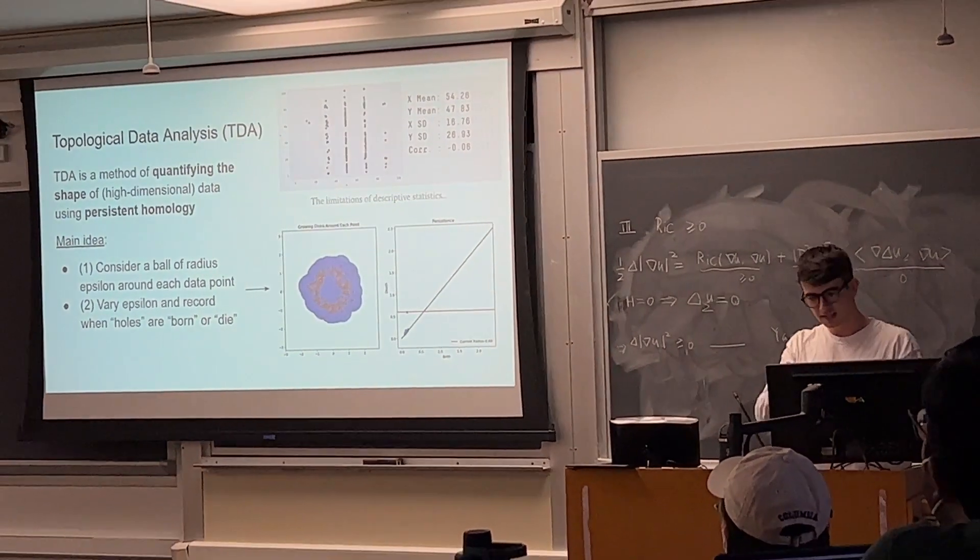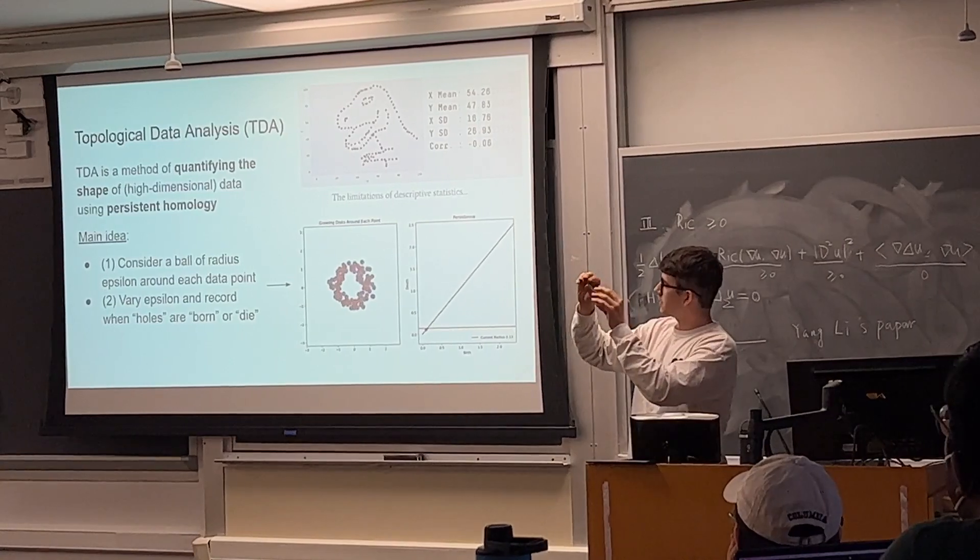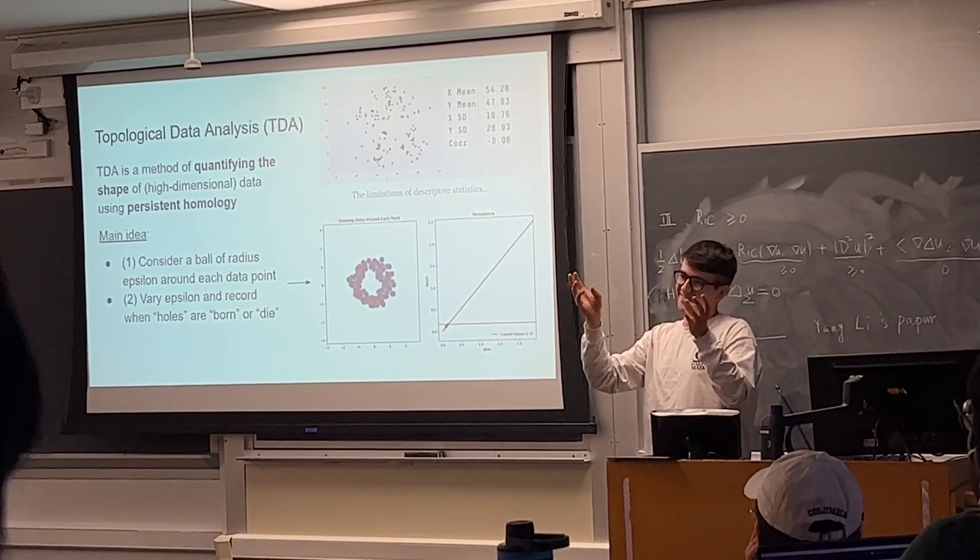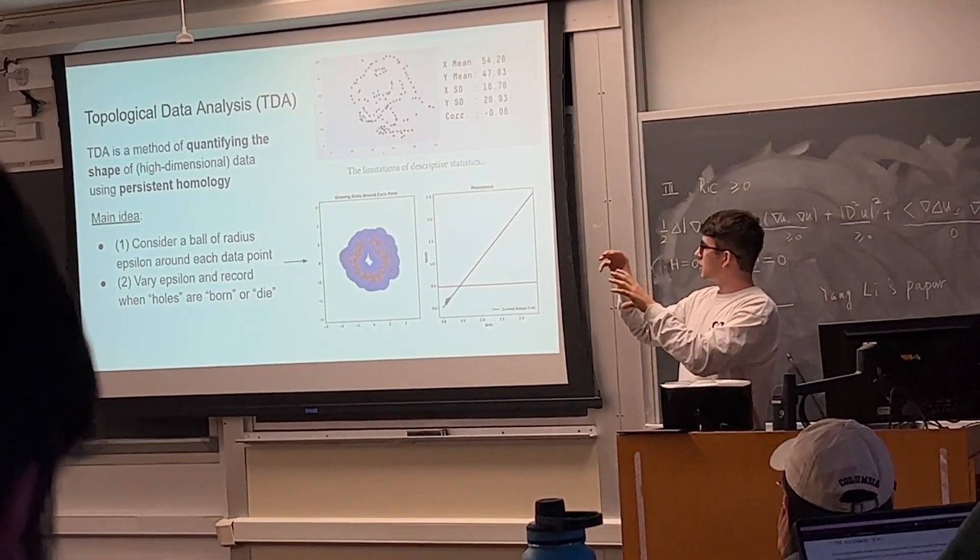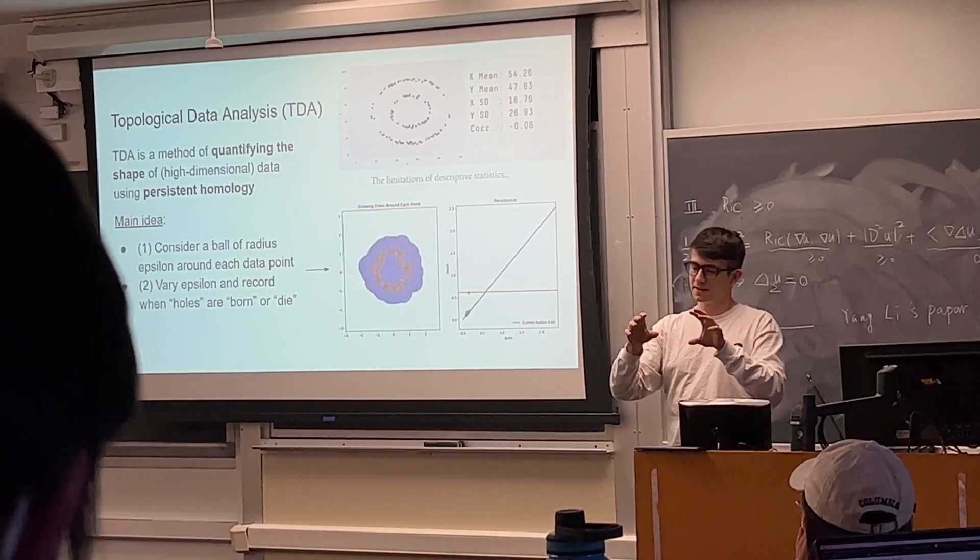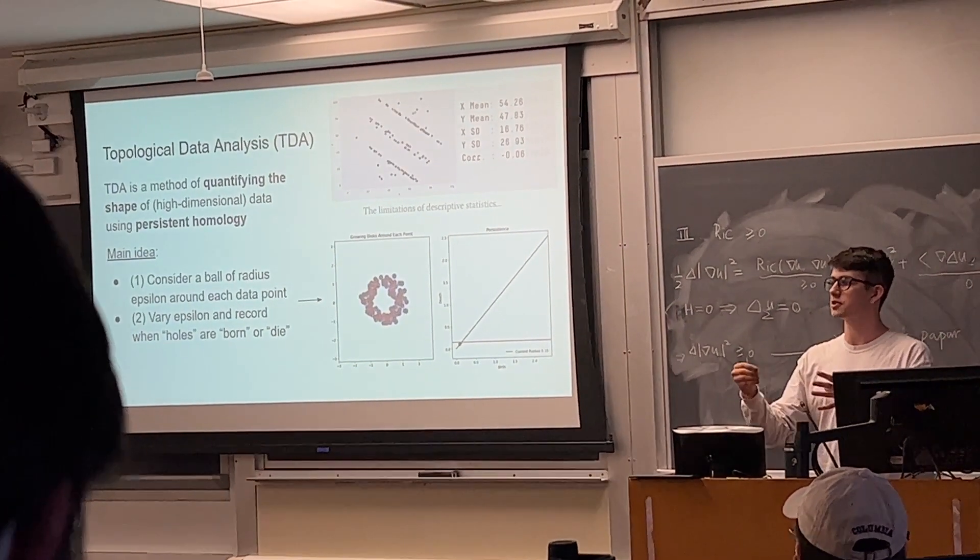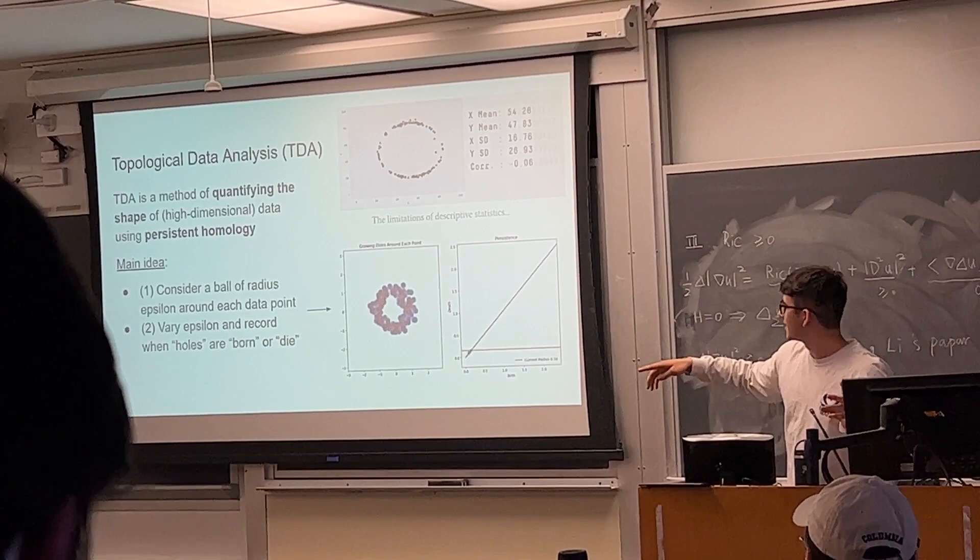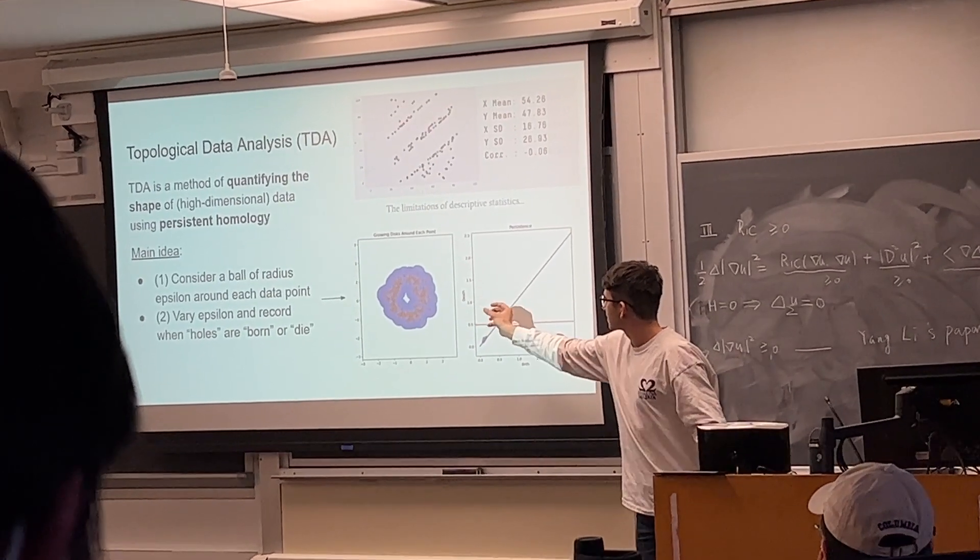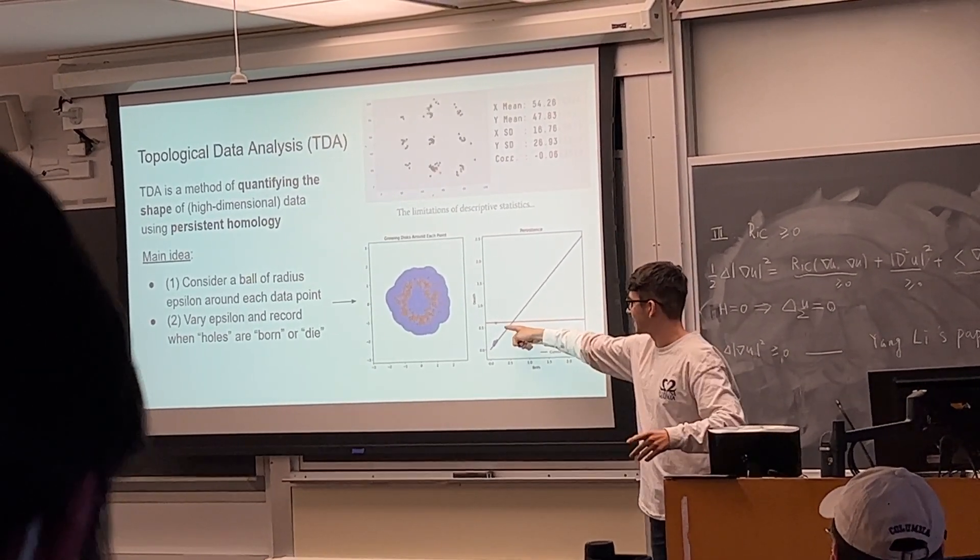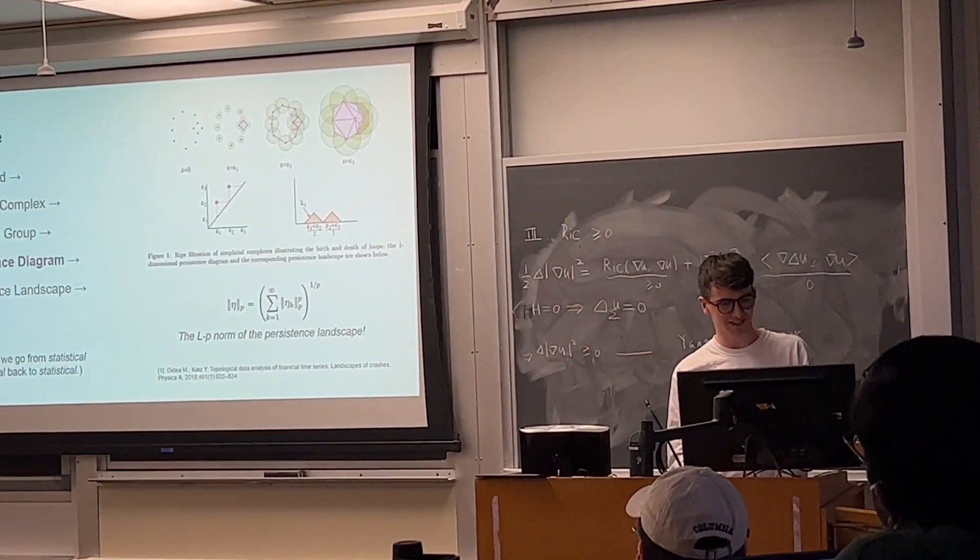The idea with topological data analysis is that you take your data, analyze it as this big point cloud, and you consider a ball of radius epsilon around each data point. You grow it and analyze the holes in your structure as you grow epsilon. The idea is that the holes that last longer as a function of epsilon are more prominent and therefore characterize your data more. You can see this in this figure where as it grows more, a hole is born here and it's shrinking and then dies. So the idea is you record the birth and the death of your holes, and that is a characteristic thing.